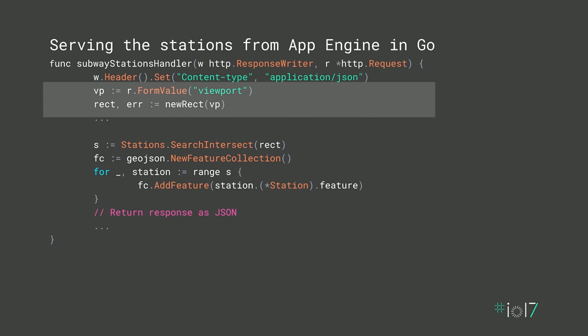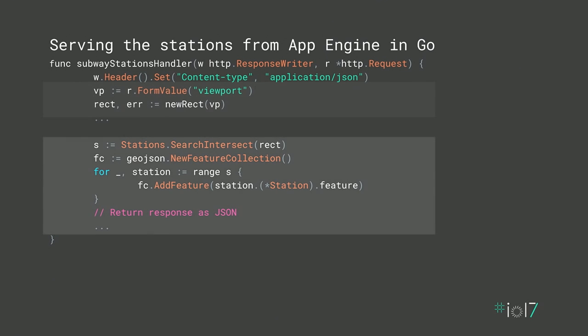We register handlers: slash-data-slash-subway-stations and slash-data-slash-subway-lines, each mapped to a function. The subway stations handler is called with a viewport parameter containing top-right and bottom-left coordinates. We get the viewport parameter, create a rectangle, and then use the R-tree to find the intersection of all locations within that rectangle, returning it as a GeoJSON object. From our Go component, we send back GeoJSON, and on the web page it's that one line: map.data.loadGeoJSON.